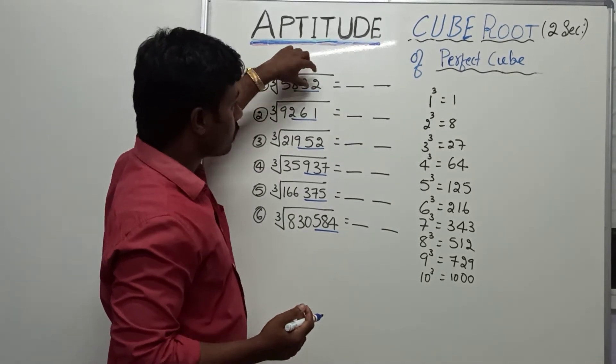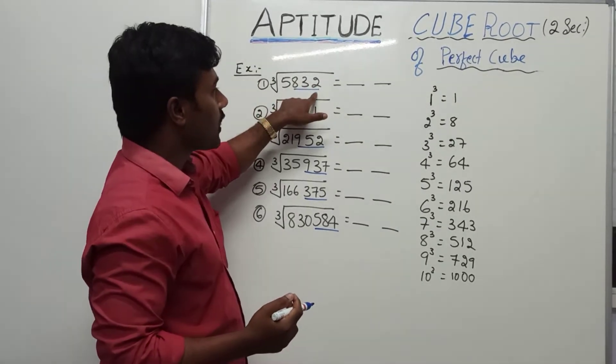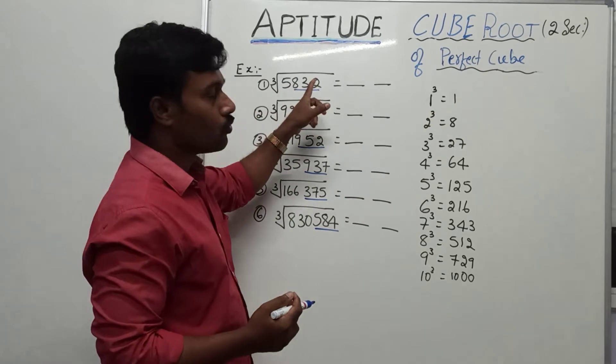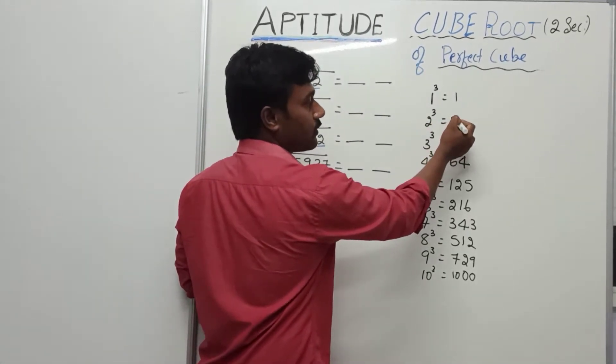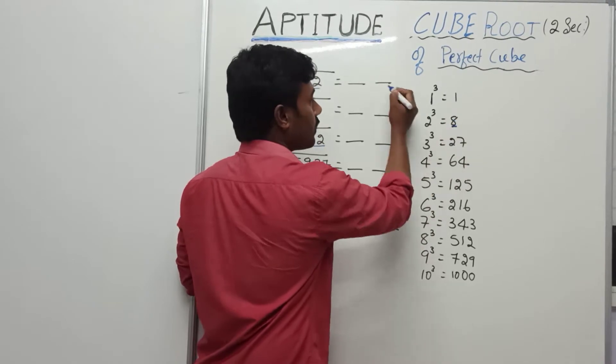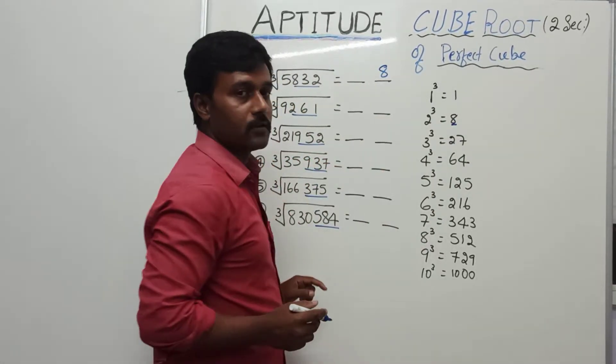Next, you observe the last digit. Last digit is 2. What is the cube of 2? Cube of 2 is 8. So here, write 8 in the unit case.